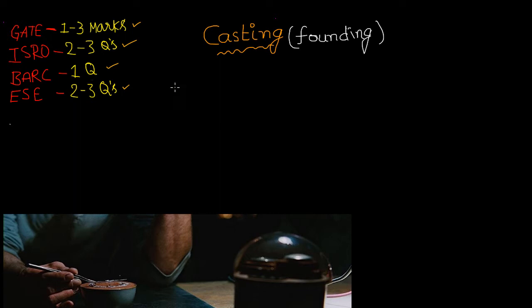How do you define casting? There are so many definitions available but I will go with the formal and simple definition. Casting is pouring of molten metal in refractory mold and allowing it to solidify.